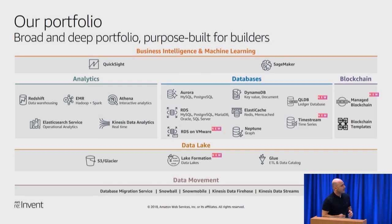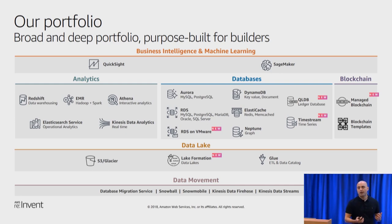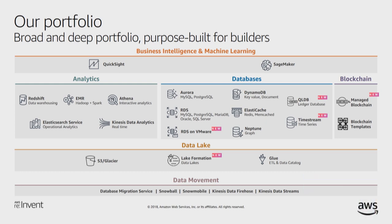Taking a step back and looking at the portfolio of database and analytic services, Amazon QLDB is technically a database service, but it has a lot in common with blockchain technology. It provides a complete history, immutable transactions, a ledger, and a journal. The difference, though, is that there is a central authority. With QLDB you also have a SQL interface to interact with it, and it has a lot of database characteristics.